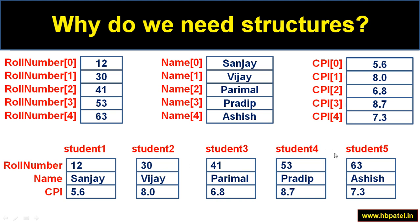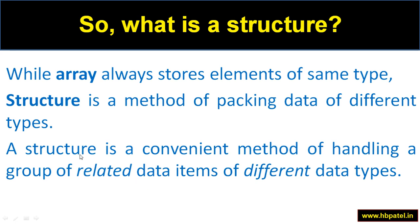If you want to put logically related data items together at one place, the solution is a structure. While an array always stores elements of the same type — all integers, all floats, or all characters — a structure is a method of packing data of different types. A structure is a convenient method of handling a group of related data items. Related because roll number, name, and CPI all belong to a student; and of different data types — integer, character array, and float respectively.